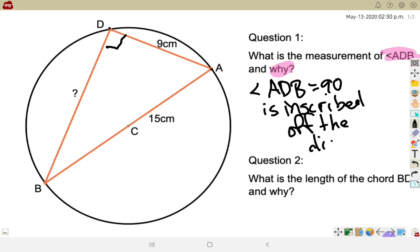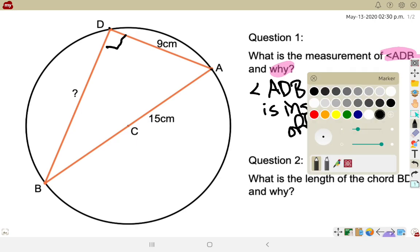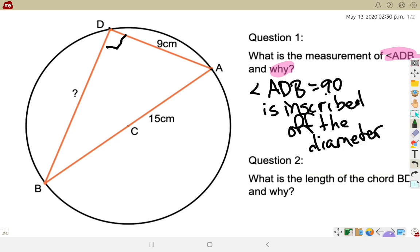All right, so question two is asking, what is the length of the chord from B to D and why? So I'm looking for this length from B to D and why. Well, if you look, I have a triangle from A to D to B and back to A. And in this triangle, I have a 90 degree angle.